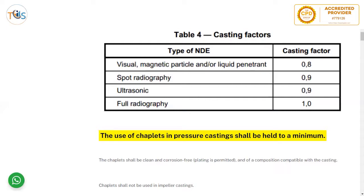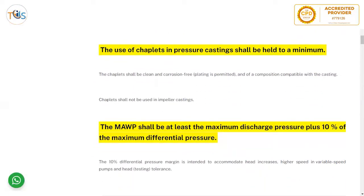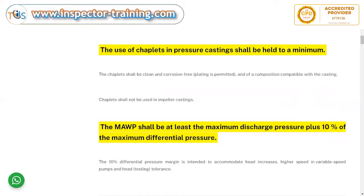You can also decrease design thickness based on pressure using the casting factor. The use of chaplets in pressure castings shall be held to a minimum. Chaplets are used to keep the mold in place and melt during pouring, but if a chaplet doesn't fully melt it can cause casting defects such as laminations and porosity. Chaplets shall be clean and corrosion-free; plating is permitted if composition is compatible with the casting. Chaplets shall not be used in impeller castings because impellers are rotating and it is too risky.